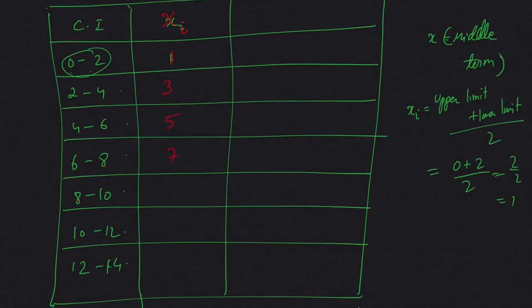Now the frequency. The frequency is given to us: f1, f2, and so on. The frequencies are 1, 2, 1, 5, 6, 2, 3.